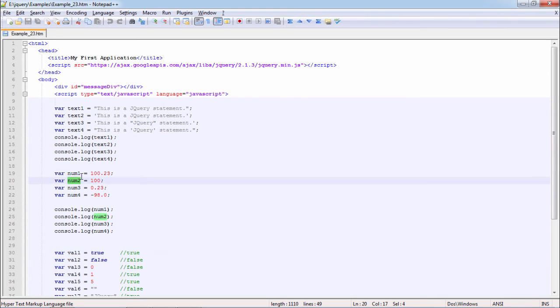Then next is numbers. Here you can see we are using decimal numbers, pure numbers, negative numbers as well. We are printing all those numbers.